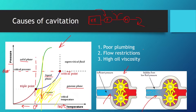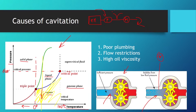One of the main factors that contribute to cavitation is poor plumbing, flow restrictions, and high oil viscosity. There are usually pressure gauges placed on the inlet of the pump so we don't get into vacuum territory, because if the pressure is really low on the inlet side we have the formation of vapor bubbles which later burst and damage our components.